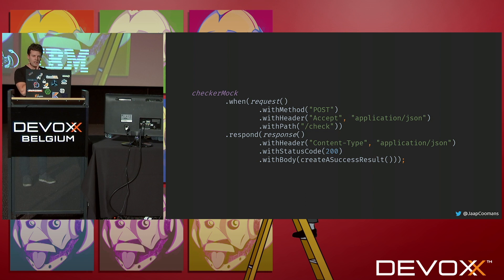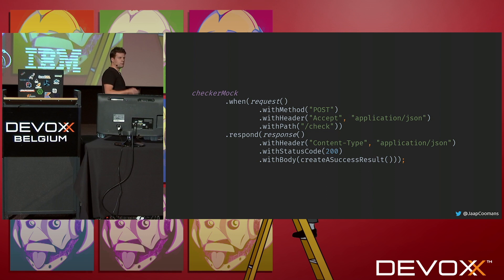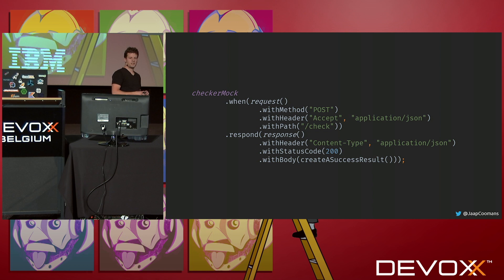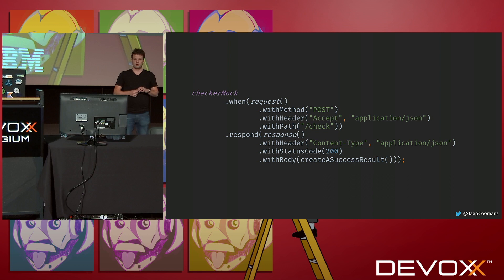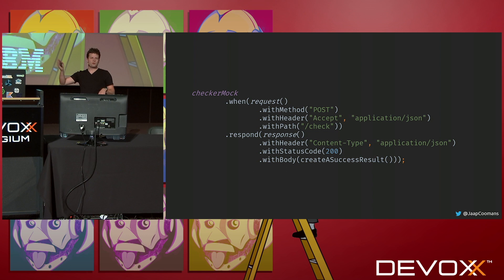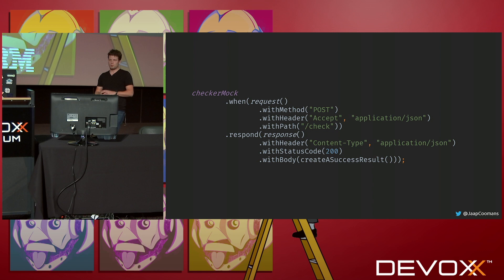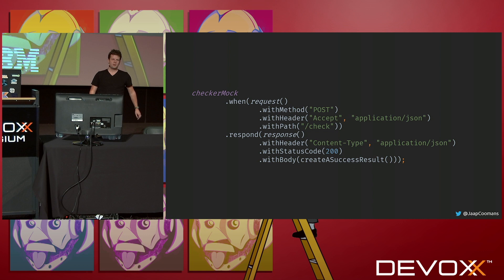Now we finally get to mock stuff. Before running my actual test I set up a mock for the checker service. I say: when I get a POST request with an accept header of application/json on path /check, respond with a content-type of application/json, status 200, and with a body I create in some other method. This is really simple and I can extend it with many more headers, cookies, and so on. The more specific you get both in the 'when' and in the response, the more specific MockServer will be — if I just say 'anything on /check' it will respond to GET, POST, whatever. If I add more details, it's more specific.